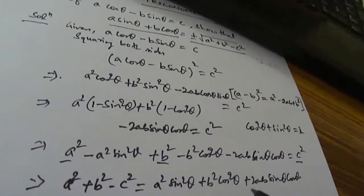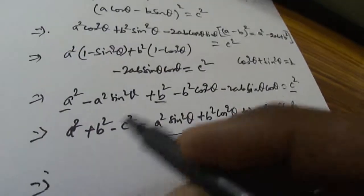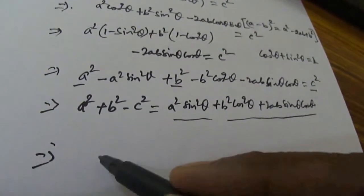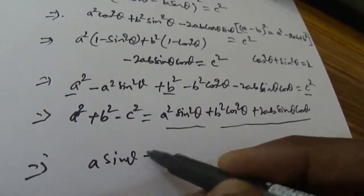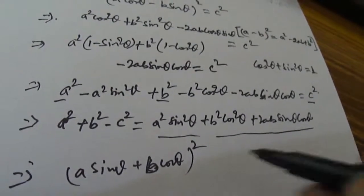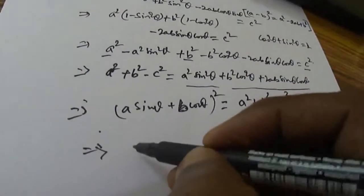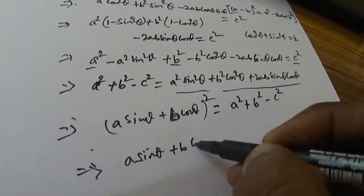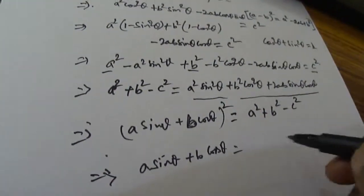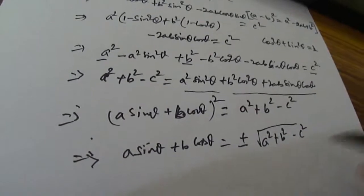So if you are observing clearly now, this particular part on the right-hand side — A squared sin squared θ plus B squared cos squared θ plus 2AB sin θ cos θ — can be written as A sin θ plus B cos θ whole squared. So A sin θ plus B cos θ whole squared equals A squared plus B squared minus C squared. Therefore A sin θ plus B cos θ equals ±√(A²+B²−C²), and that is the solution.